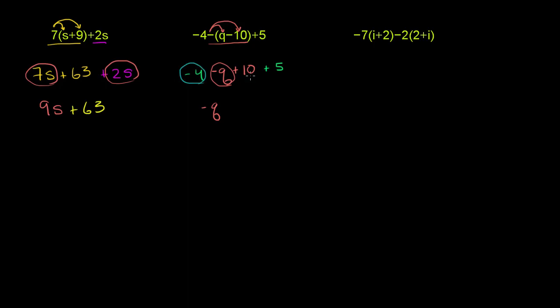We have negative 4 plus 10 plus 5. So negative 4 plus 10 is 6, plus 5 is 11. Plus 11. Negative q plus 11, and the rest of this adds up to 11.